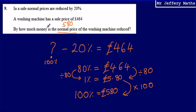I'm asked by how much money is the normal price of the washing machine reduced. So the normal price is £580. The sale price of the washing machine is £464. So the amount that it has been reduced by is going to be £580 minus £464. And that is going to give me an answer of £116. So the amount that the washing machine has been reduced by is £116.